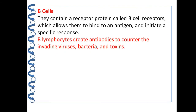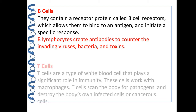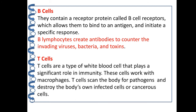B cells contain a receptor protein called the B cell receptor, which allows them to bind to an antigen and initiate a specific response. B lymphocytes create antibodies to counter invading viruses, bacteria, and toxins. T cells are a type of white blood cell that plays a significant role in immunity. These cells work with macrophages, scan the body for pathogens, and destroy the body's own infected cells.